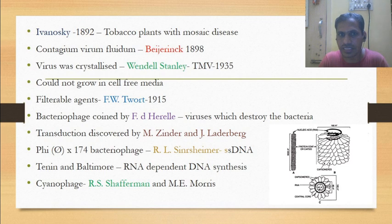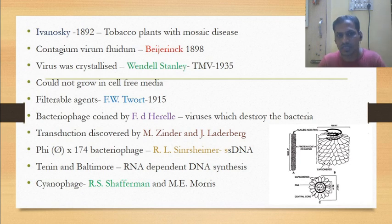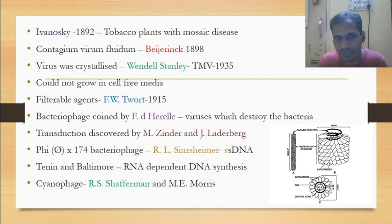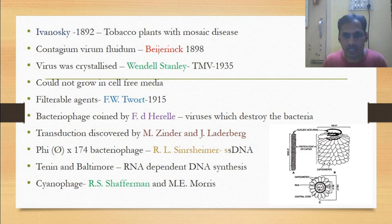Beijerinck, in 1898, described virus as contagion vivum fluidum. Virus was first crystallized by Wendell Stanley in tobacco mosaic virus in the year 1935. Virus cannot grow in a cell-free medium like nutrient medium or potato dextrose medium. Virus can be filterable, discovered by Twort in 1915.